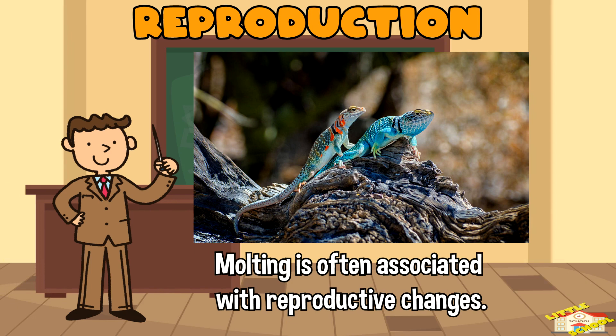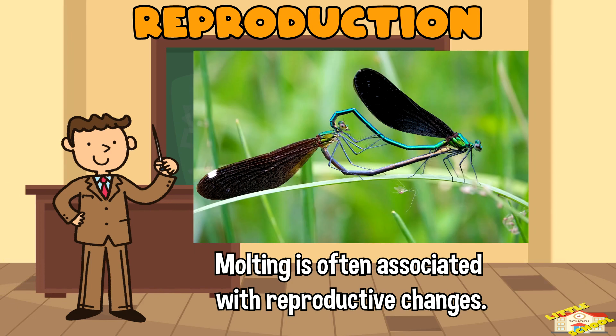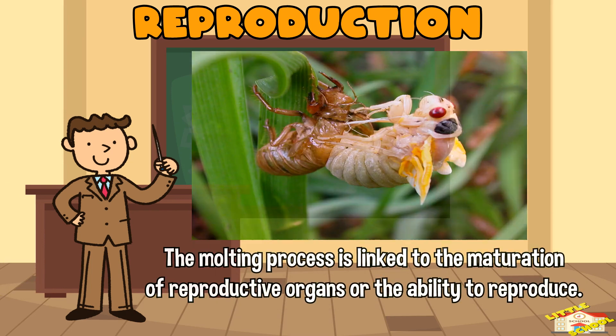Reproduction: molting is often associated with reproductive changes. In some species, the molting process is linked to the maturation of reproductive organs or the ability to reproduce.